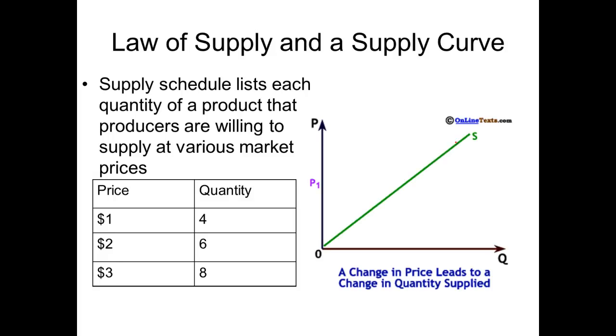So anyways, here's what a supply curve looks like. Basically what you can see is you're going to have your price on the vertical axis here. And then your quantity is going to be on the horizontal axis here.